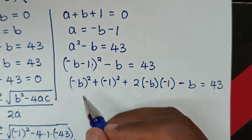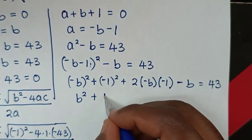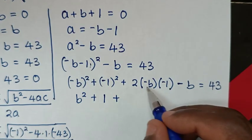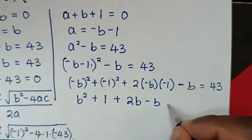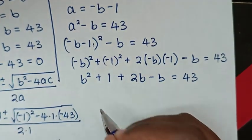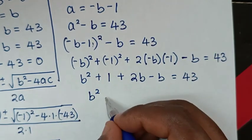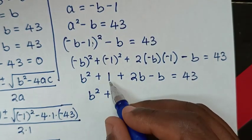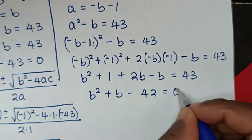Simplifying, we get b squared plus 2b minus b plus 1 minus 43 equals 0, which becomes b squared plus b minus 42 equals 0.